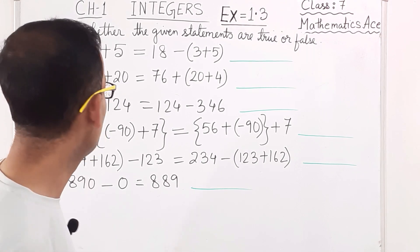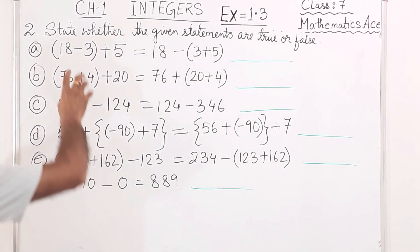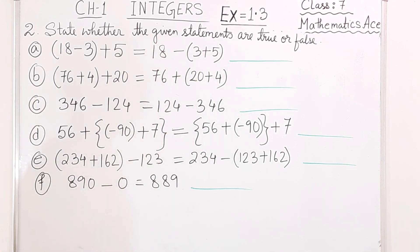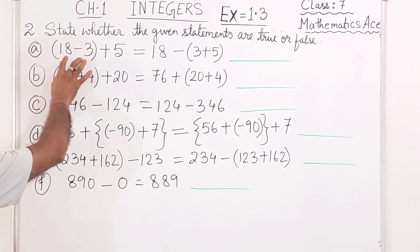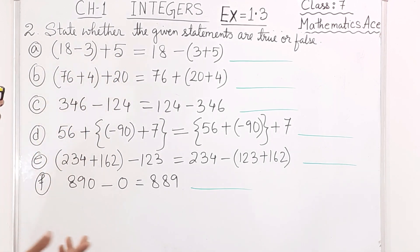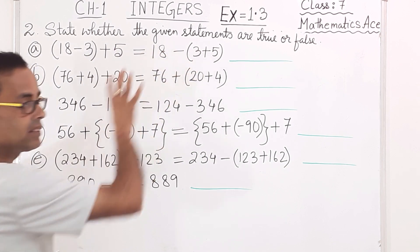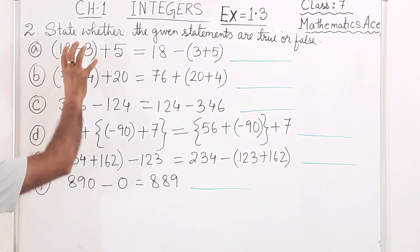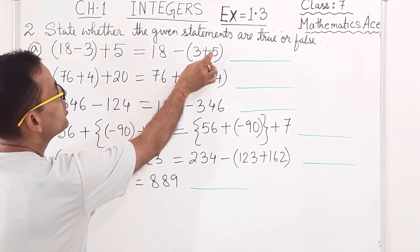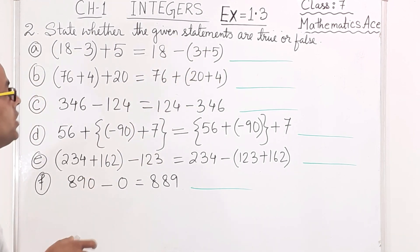Now question number 2: state whether the given statements are true or false. First: 18 - 3 + 5 = 18 - (3 + 5). This is not following any property. Here the plus and minus are being changed. The left side gives 15 + 5 = 20. The right side gives 18 - 8 = 10. They are not matching, so this statement is false.